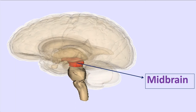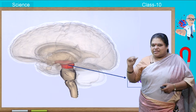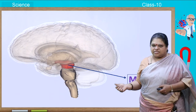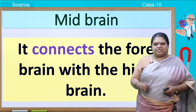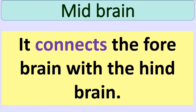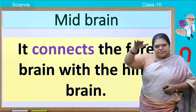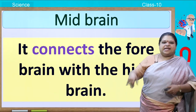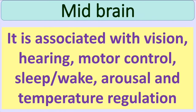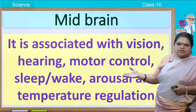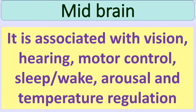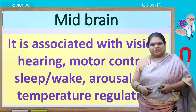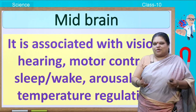The midbrain is a small portion present inside the brain below the forebrain. Its main function is to connect the forebrain with the hindbrain — it acts like a relay station. Not only that, it is associated with vision, hearing, motor control, sleeping, waking up, arousal, and temperature regulation. All these are controlled by the midbrain. Please make note of all these things.